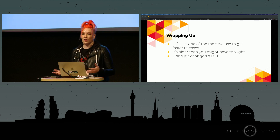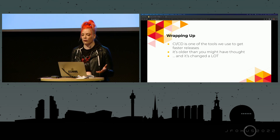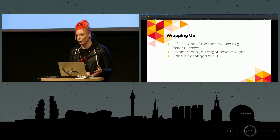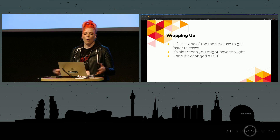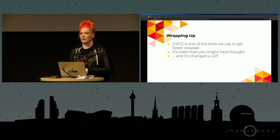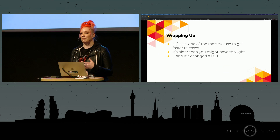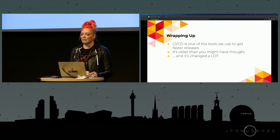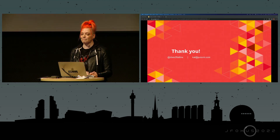We didn't just get more frequent releases and not caring about what version of the Twitter app is on our phone. We also got better metrics, observability tools, tracing, and a whole host of security tools that all work inside of your CI/CD system and enable those faster, cleaner releases that we don't really notice anymore — which is pretty dope. Thank you for coming to my lightning talk on a walk through the history of CI/CD.